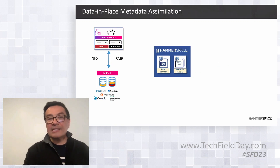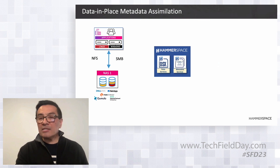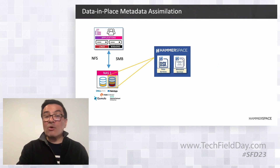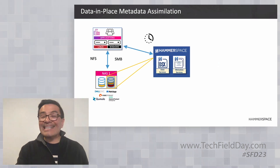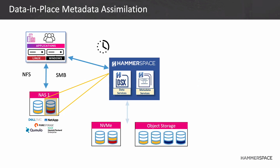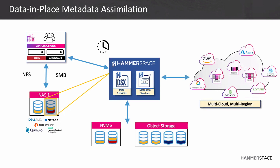We have a functionality called data in place assimilation. In most cases where you replace one NAS system with another, you have to do a full data migration, which customers have told us can take several months. Instead, we scan the file system's metadata from the third-party NAS system, replicate that metadata into our Anvil servers, and can start serving IO requests within less than a minute — without having to move any data. That storage system — a NetApp, Isilon, or others — becomes our back-end storage. From there, you can create a policy to move specific data, like placing anything accessed in the last two weeks onto NVMe.